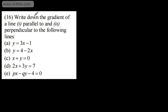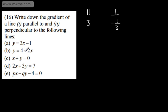In question 16, we're asked to write down the gradient of the line parallel and perpendicular to the following lines. This line is in the form y = mx + c, so we can say the gradient of the parallel line is 3, and the perpendicular is negative one third. This next line is not in the correct form; the gradient is negative 2, so the parallel gradient is negative 2. Since it's negative 2 over 1, the perpendicular gradient is positive one half — inverting the fraction and changing the sign.